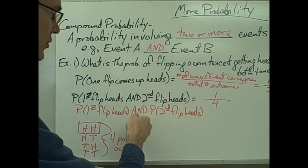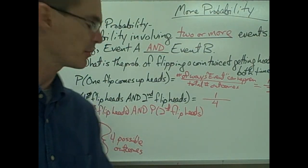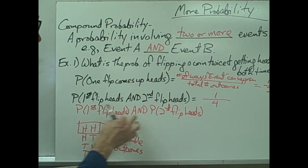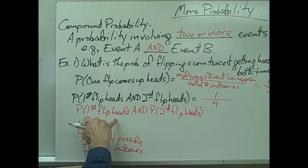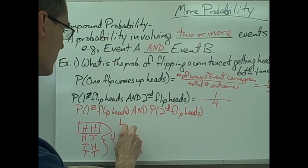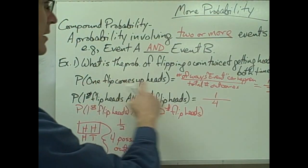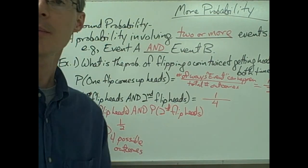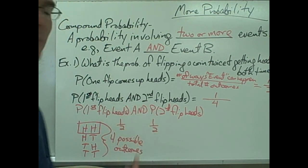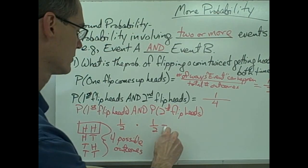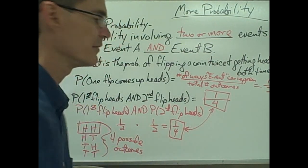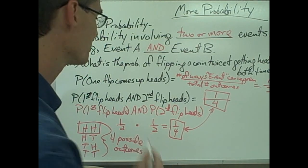There's another way to calculate this probability, and for more complicated problems, this second way is often easier. If I write the probability as the probability of the first event times the probability of the second event, I get one-half times one-half, which equals one-fourth — the same answer. This is called the multiplication rule.